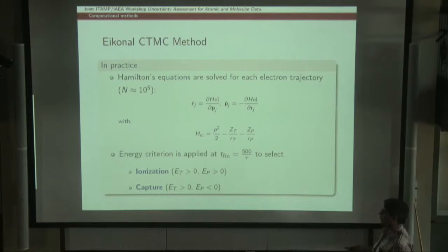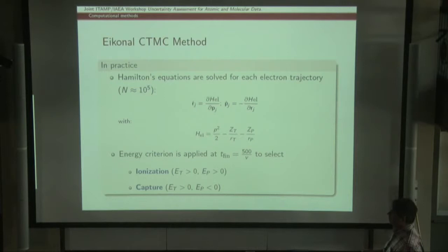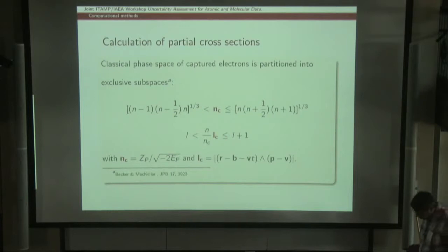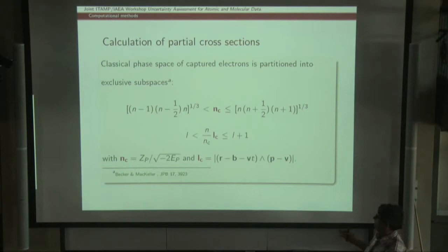After the integration is carried out, we have to distinguish between the different processes involved. For example, we look at whether the energy of the electron is negative with respect to target and projectile. In the case of capture, the trajectory is said to be a capture trajectory, and the energy of the electron is positive with respect to the target and negative with respect to the projectile. The calculation of transition probabilities and cross sections is similar to the close-coupling methods. N-partial and NL-partial cross sections can be calculated using the recipe of Baker and McKellar, where the classical phase space is divided into different boxes to evaluate how many trajectories fall into each.